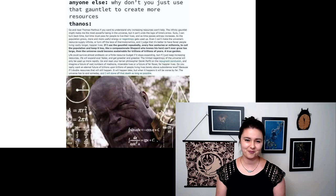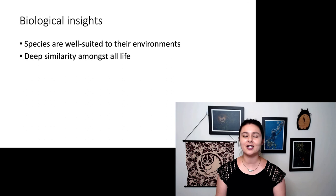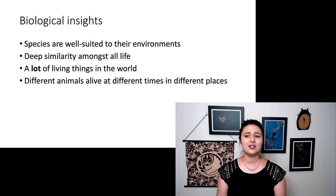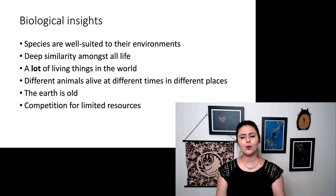So let's remind ourselves of all of the biological insights. We're seeing species are very well suited to their environments. We see deep similarity in all parts of different organisms. There's just so many different living things out there. Different animals are alive at different times in different places. The Earth is very old, thank you geology. And we're seeing this competition for limited resources. So all of these things are the insights that Darwin is working with to come up with his theory. Can you describe these in your own words?